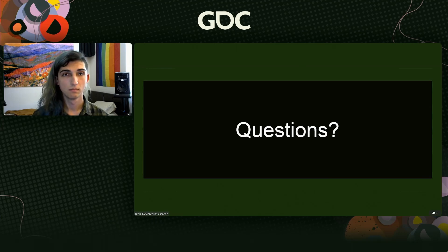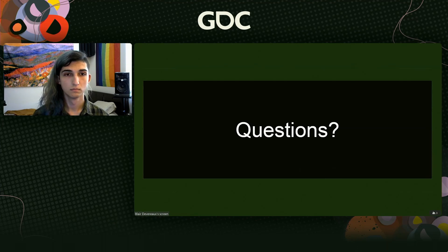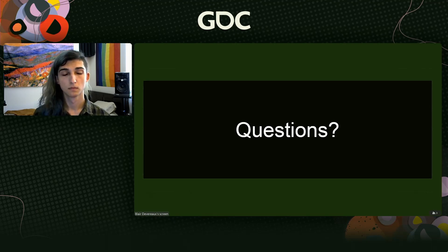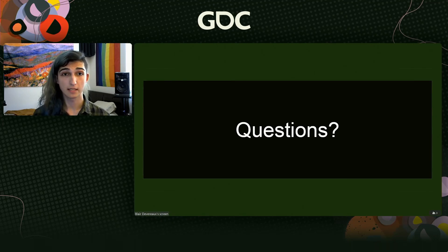Question: Is ambisonics or binauralization impacted or reliant upon standardizations of other audio protocols — volume, format, platform — do many things need to be aligned to maximize the effect? Basically, is ambisonics a fit for every game and every platform, and are there external influences that throw a wrench in the works? Answer: Very much so. I find that building a game for PC and current-gen consoles works well.